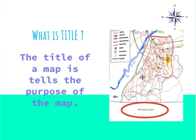What is Title? The title of a map tells us the purpose of a map. Here is the title of this map: Road Map of Lahore. It tells the purpose of the map — it tells us that it's a road map and it's of Lahore.